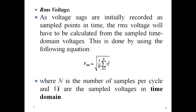Because we have been dealing with the calculation of RMS values from the very beginning of our studies — generally, for a waveform, the RMS value is written mathematically as the square root of 1 by T, where T is the total time period. Now, because voltage sag is initially recorded as samples in time, the RMS voltage will have to be calculated in the sample time domain.